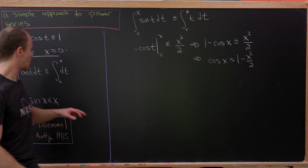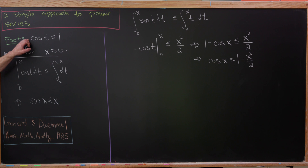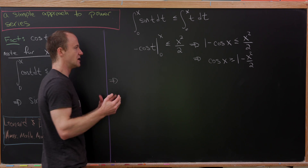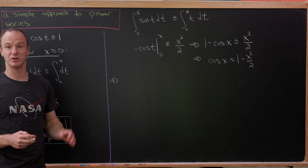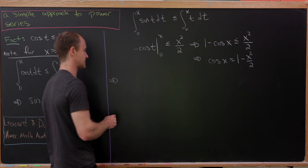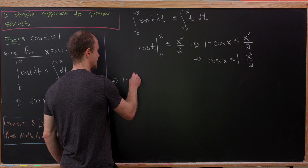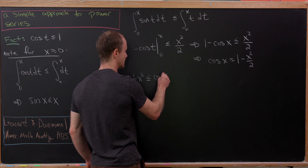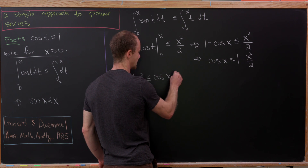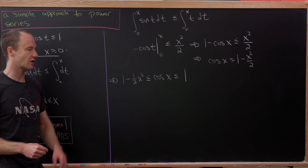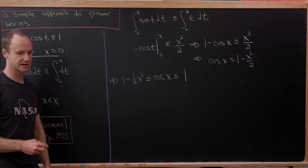Recalling the earlier inequality cos(x) ≤ 1, we can now sandwich cosine between two nice objects: one minus one-half x squared is less than or equal to cosine of x, which in turn is less than or equal to one, for all positive values of x.